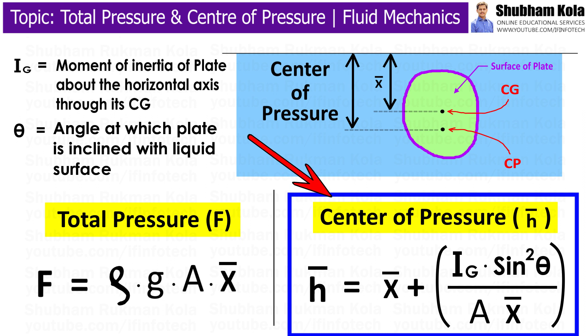Now, the center of pressure is the single point at which total pressure force will act. Therefore, CP is the center of pressure and H-bar is the height of the center of pressure from the free surface of liquid.